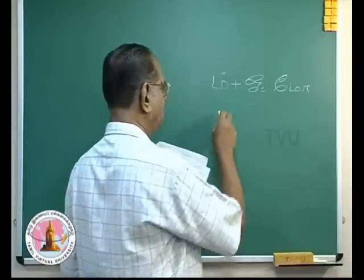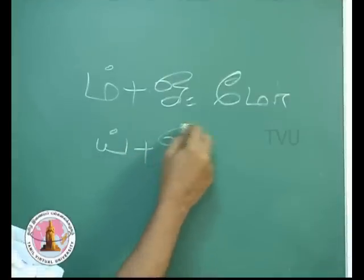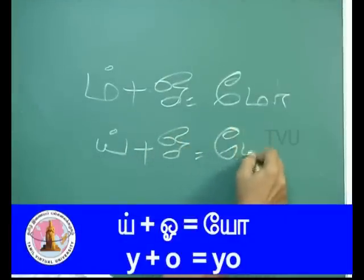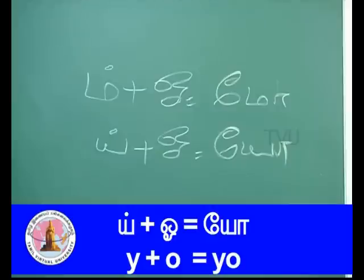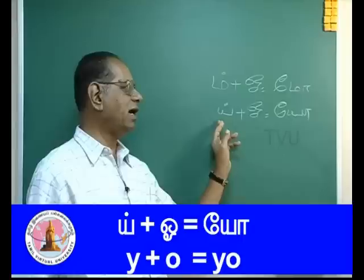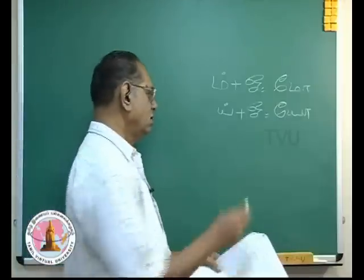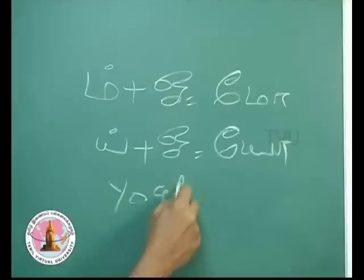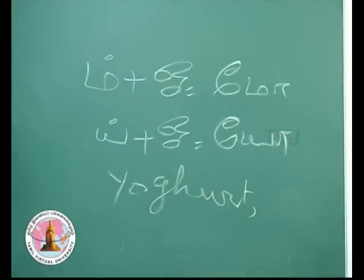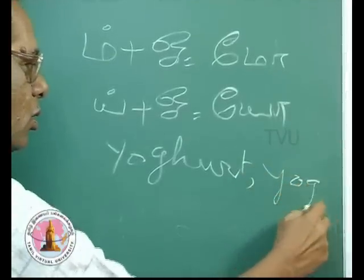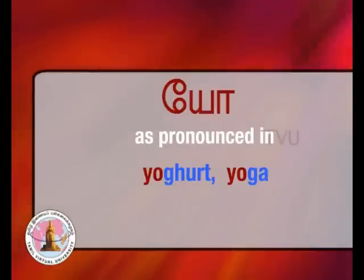The next letter is 'Yo' — 'Ya' with a dot above becomes a consonant, and the vowel O is added and it becomes 'Yo', as in 'yogurt' or the world-famous Indian term 'yoga'. That concludes this lesson.